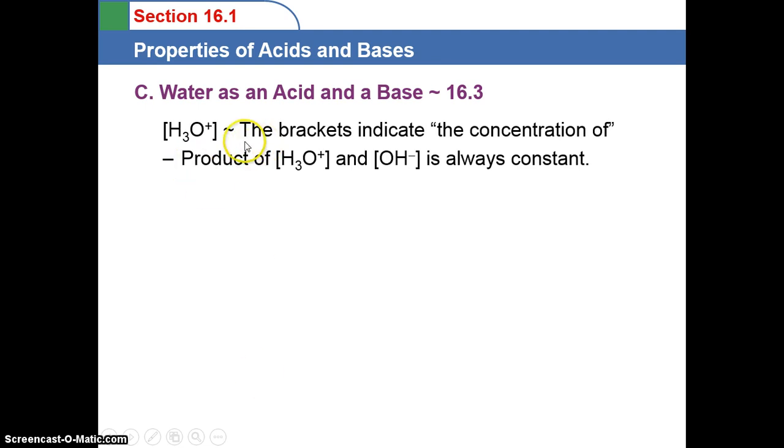The product of H3O+ and OH- is always constant. So the KW at 25 degrees Celsius, the concentration of hydrogen ion times the concentration of hydroxide ion, is always 1 times 10 to the negative 14th.